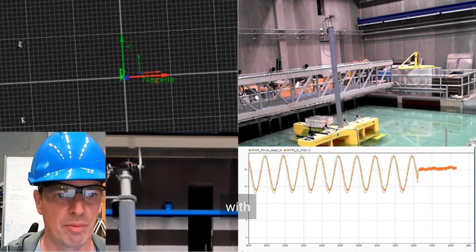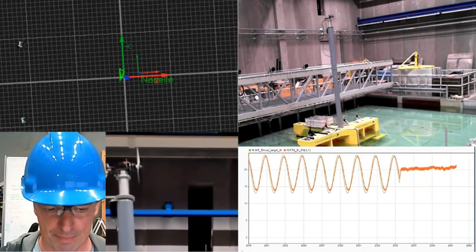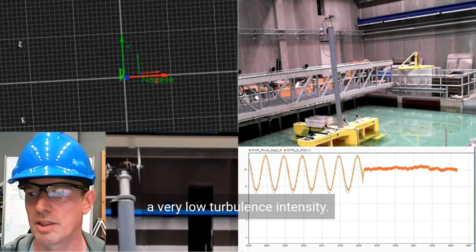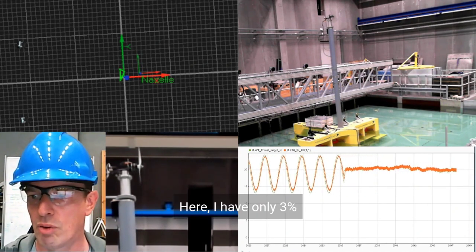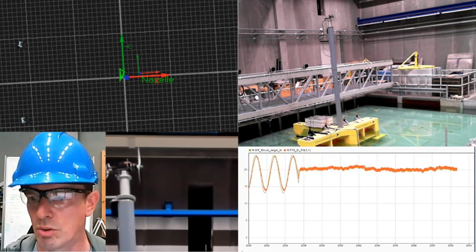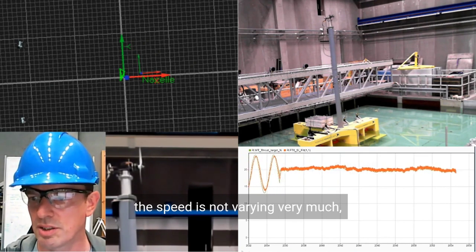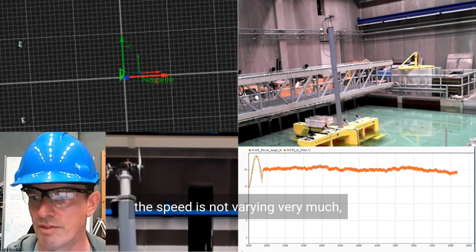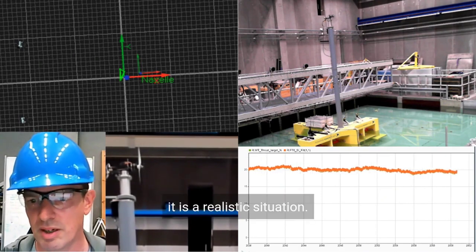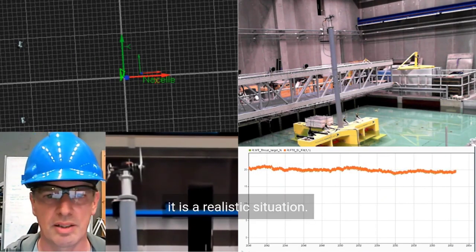I will put on a wind turbine with a very low turbulence intensity. Here I have only 3% turbulence intensity. So the speed is not varying very much. But it is a realistic situation.